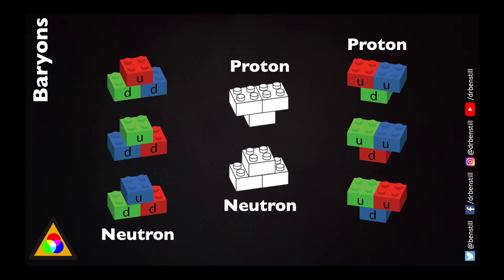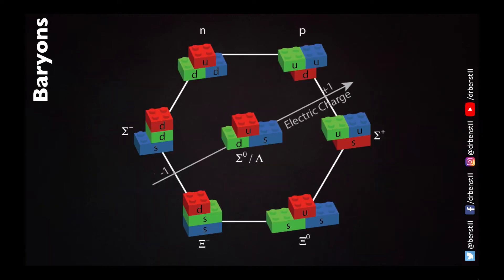This is why protons and neutrons are stable and why they make up the nucleus of every atom. We don't have to stop there — we can use other quarks beyond up and down. For instance, if we throw the strange quark into the mix, which is the heavier version of the down, we can start building more weird and wonderful baryons. There'll be more on this in a future video entitled Eightfold Way. The quarks that particles are made from provide them with their properties such as electric charge.